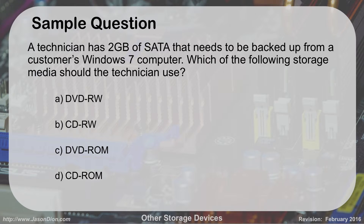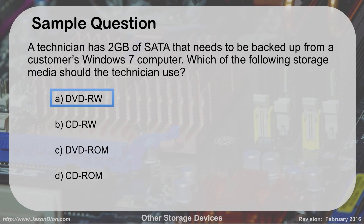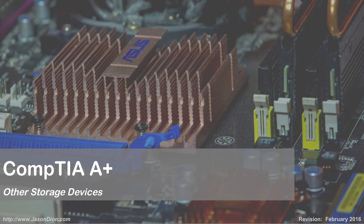As a practice question: if you have two gigabytes of data that needs to be backed up from a customer's Windows 7 machine, what's the best choice — a DVD-RW, a CD-RW, a DVD-ROM, or a CD-ROM? The answer is A, DVD-RW — because it holds 4.7 gigabytes and is writable. A CD-RW only holds 700 megabytes, so you'd need three of them. The ROM options are read-only and can't be written to. DVD-RW is the best choice.